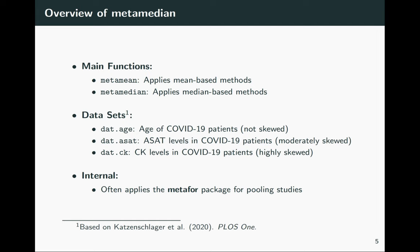The example datasets contain data on different variables comparing COVID-19 survivors and non-survivors. The dat.age dataset, which I'll focus on throughout this presentation, contains data on the age of these COVID-19 patients. An important aspect of the package structure is that many approaches use inverse variance weighting, so internally the package applies the metafor package for the pooling step. The object returned by many functions in the metamedian package is the same object returned by metafor, enabling users to access familiar functionalities such as forest plots, funnel plots, and tests for small study effects.